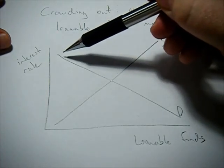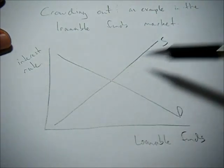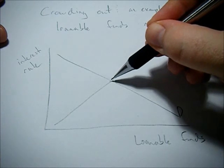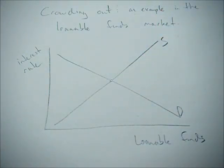So the demand for loanable funds and supply for loanable funds intersects and gives us some equilibrium interest rate and quantity of loanable funds.